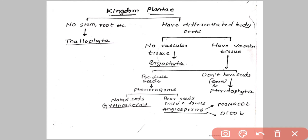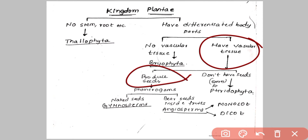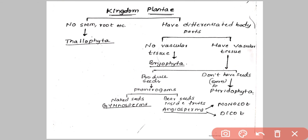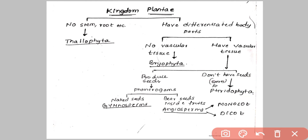If there is a presence of vascular tissue, we move to the next check: whether seeds are produced or not. If seeds are produced, that is called Phanerogams. If seeds are not produced, then that division is called Pteridophytes.